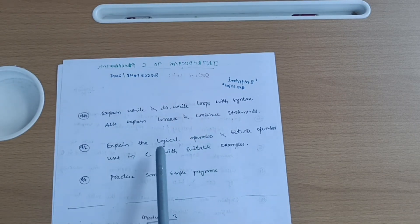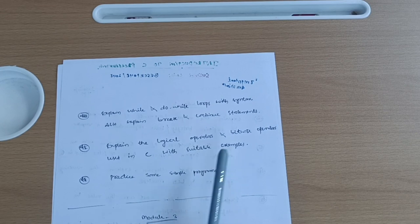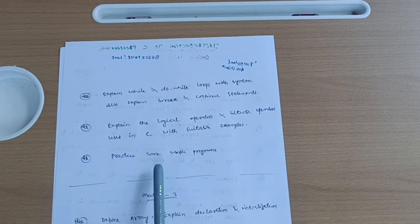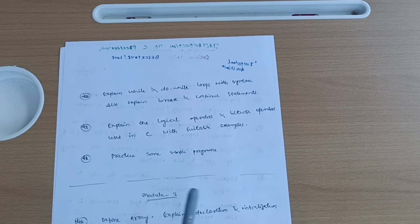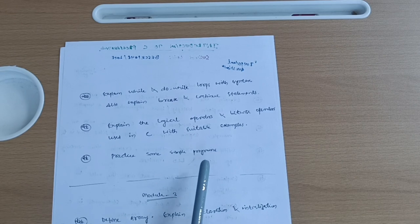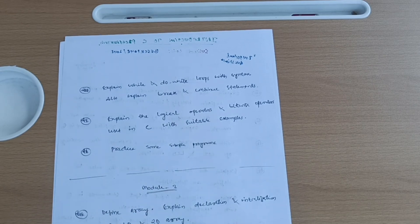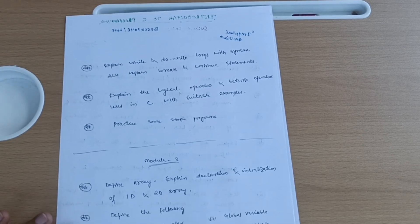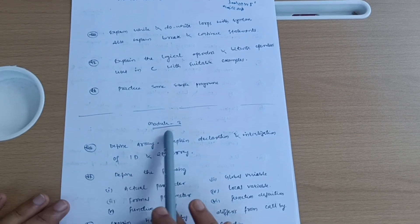This is a super important question: explain the logical operators and bitwise operators used in C with suitable examples. And you have to practice some simple programs from module second. If you just record the module question papers or previous question papers, you will find some easy programs which you have to go through surely, so that you can score more than 15 marks in module 2 also. And also I have provided the link for the model question papers and previous year question papers in the description box. You can avail that.